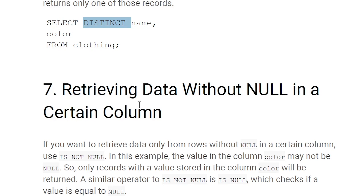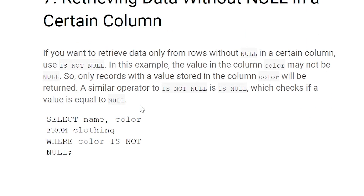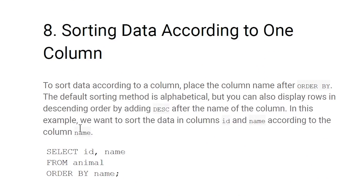Retrieving data without NULL in a certain column: if you want to retrieve data only from rows without NULL in a certain column, use IS NOT NULL. A similar operator is IS NULL, which checks if the value equals NULL. For example, SELECT name, color FROM clothing WHERE color IS NOT NULL — only records with a value in the color column will be returned.